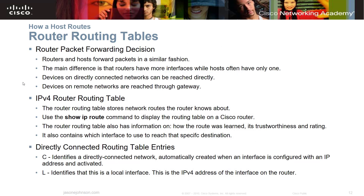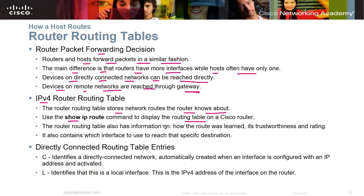Router routing tables have a forwarding decision to make. Routers and hosts forward packets in a similar fashion, but the main difference is that routers have more interfaces while hosts have only one. Devices on a directly connected network can be reached directly; devices on a remote network are reached through a gateway. On a Cisco router, you can use the show ip route command to display the routing table, which stores information on how each route was learned, its trustworthiness, and which interface to use to reach each destination.